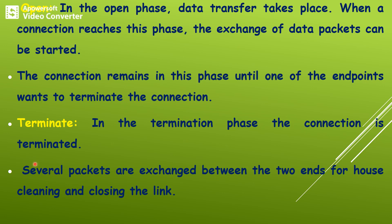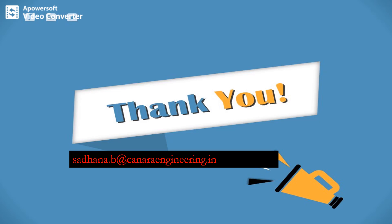In the open phase, data transfer takes place. When the connection reaches the open phase, the exchange of data packets begins and the connection remains in this phase until one of the endpoints wants to terminate. In the terminate phase, the connection is terminated after the exchange of packets and one party must agree to terminate. The system remains in the terminate phase until all carriers are dropped. Once all carriers are dropped, it returns to the dead state where there are no active carriers present.